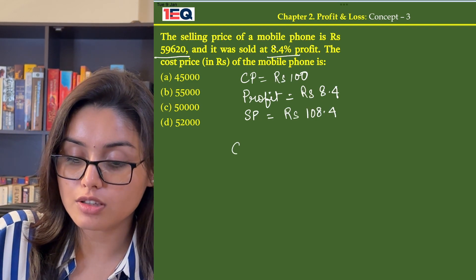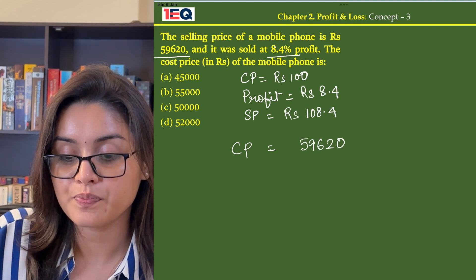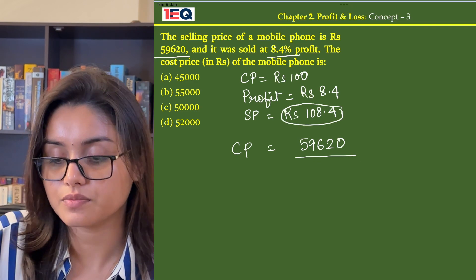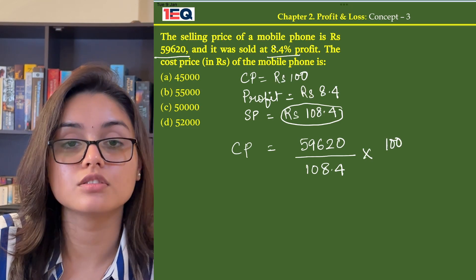So my cost price will be my selling price, that is Rs. 59,620, divided by my assumed selling price that is Rs. 108.4, into Rs. 100 or my assumed cost.